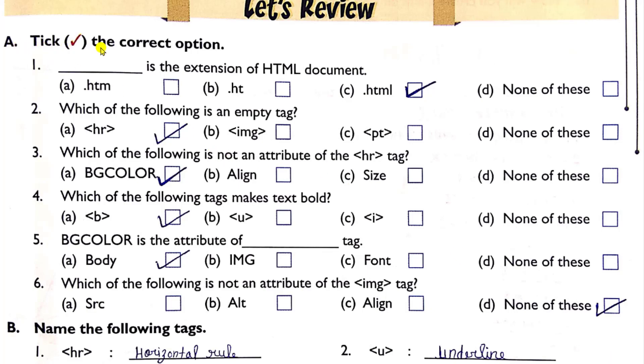So first question is tick the correct option or you can say MCQs. Dash is the extension of HTML documents. Its correct answer is .html. Keep in mind this dot plays an important role because it is an extension of file. If you write this dot anywhere else that answer will be wrong. So .html is the correct answer.